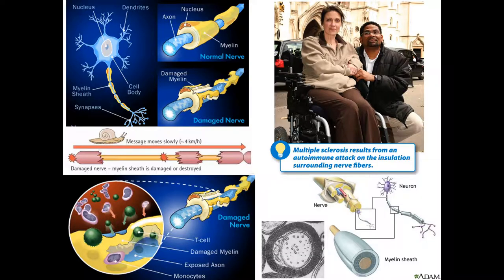The last autoimmune disease we'll discuss is MS — multiple sclerosis. Many nerves are lined with a layer of insulation called myelin, which helps electrical signals travel quickly in one direction. If that insulation is destroyed by your immune system making a mistake, the signal moves much slower. Eventually the signal to breathe may not travel fast enough, and you asphyxiate. We currently have no cures for any of these autoimmune diseases — our best treatments are drugs to suppress the immune system, which slows disease progression but makes you more susceptible to other infections.